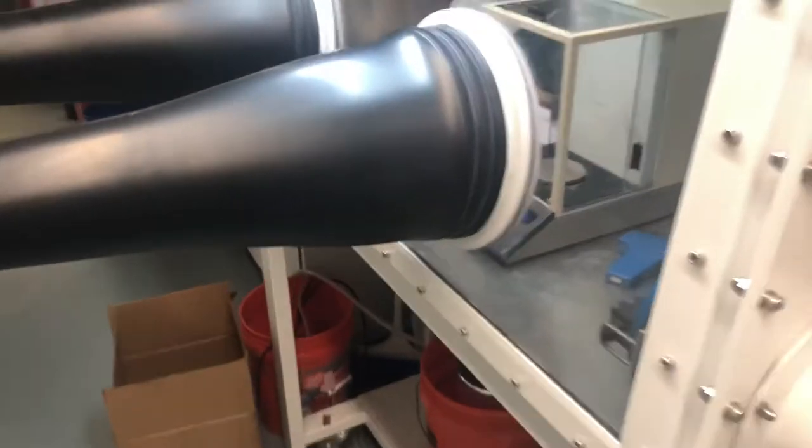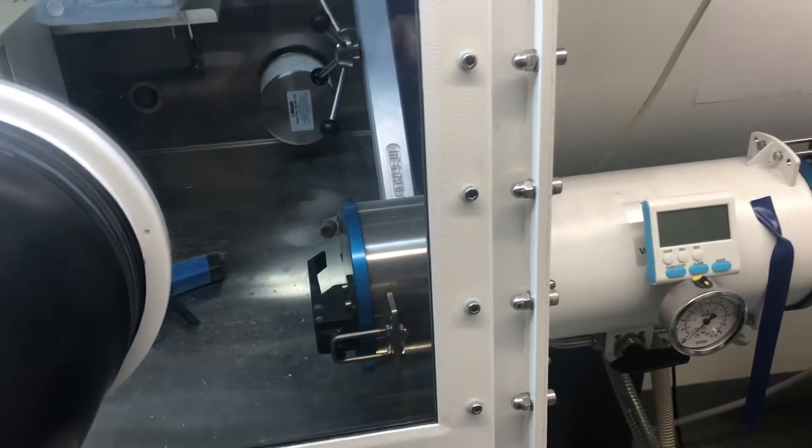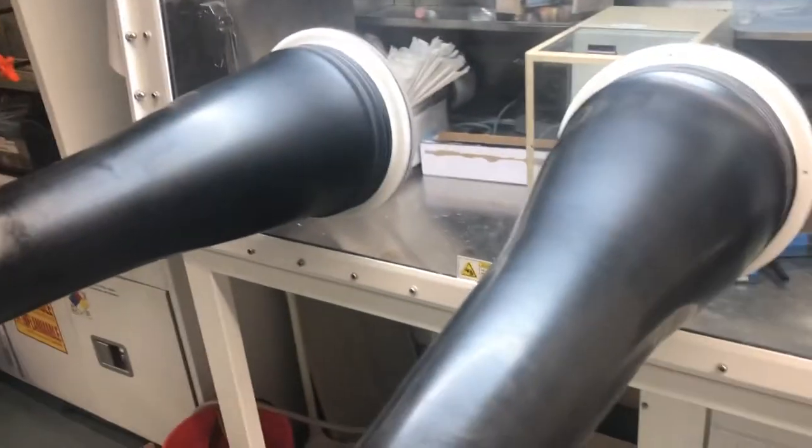When you are done on the glove box, you will put your items back into this. You open a door again, put your items in, seal the door behind it, and then you can pull your arms out of the glove box.